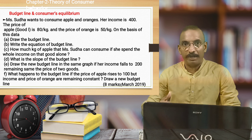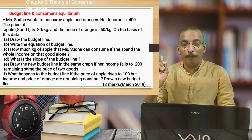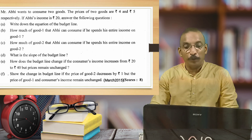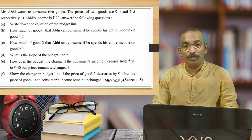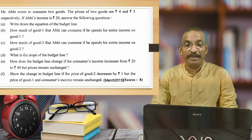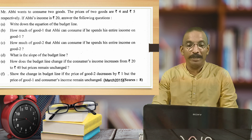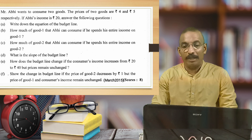For many questions, we have to discuss the question paper. You can see the topic in the link — click the topic in the comments. Mr. Abhi wants to consume 2 goods. Almost the same type of question: write the equation of the budget line, how much of good one he can buy, how much of good two he can buy, and the slope of the budget line. This is the same replica of the previous question, and it is an 8-mark question.